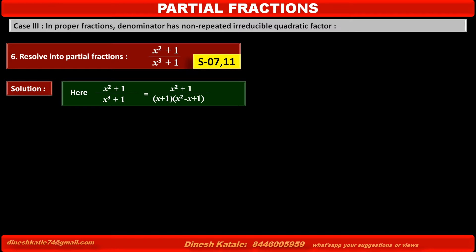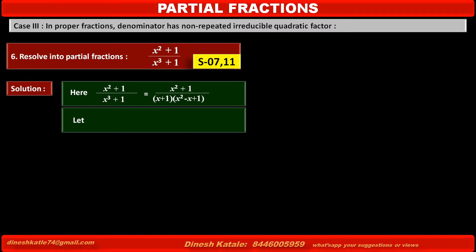Let the fraction (x² + 1) / [(x + 1)(x² - x + 1)] be equal to A/(x + 1), where x + 1 is a linear factor, plus (Bx + C)/(x² - x + 1), where x² - x + 1 is a quadratic factor.